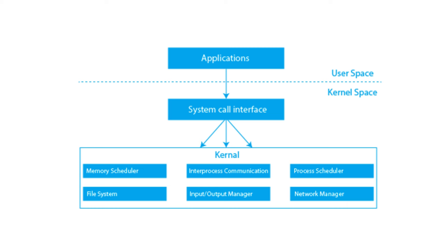The user interface, which can be a graphical user interface or command line interface, provides the means for users to interact with the computer. Security and access control protect system integrity by managing user permissions and preventing unauthorized access. Networking components enable communication and data sharing between computers over local and wide area networks. Error detection and handling identify, report, and manage system errors, ensuring stability and reliability. Finally, system utilities and services perform routine tasks like file backup, disk cleanup, and system monitoring.